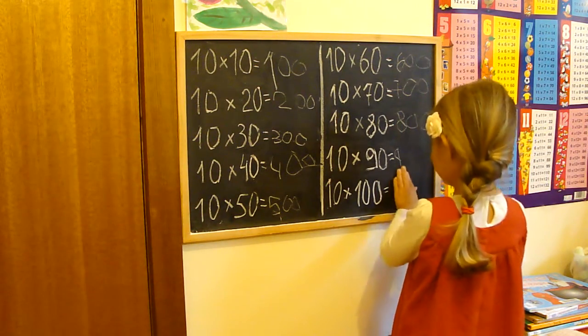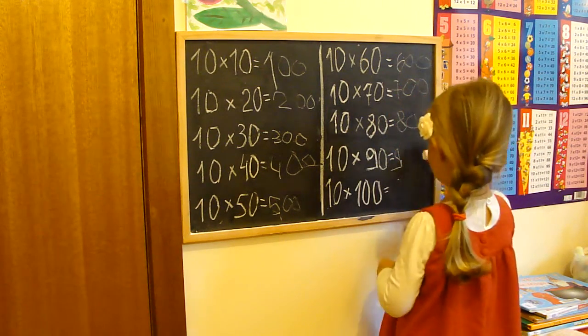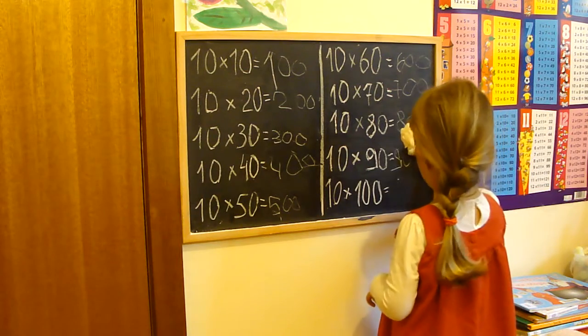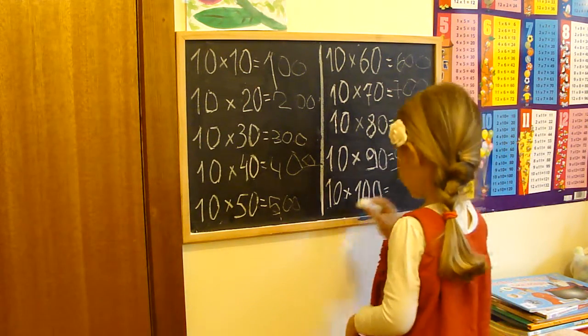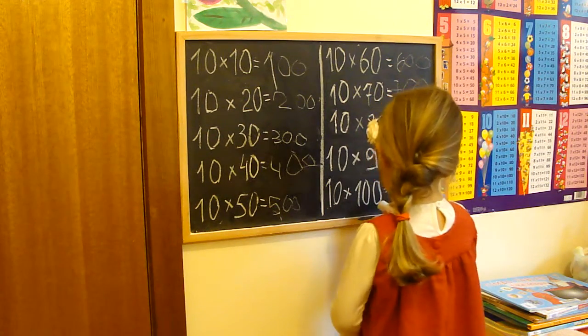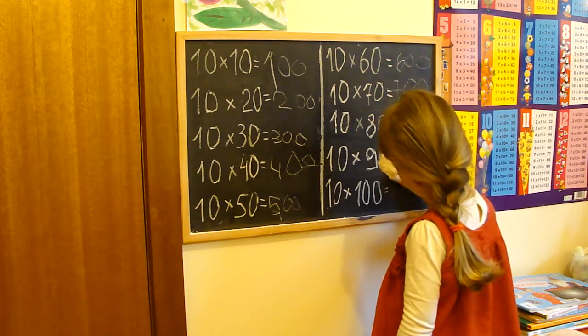It's too big. Here I go. Okay. And the last one. 10 times 100 is 1000. Yes, 1000.